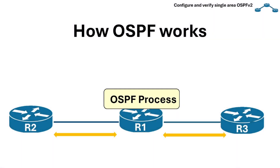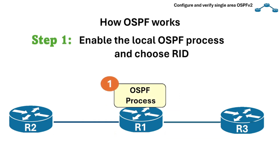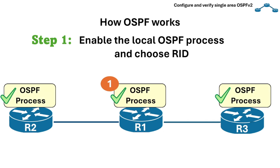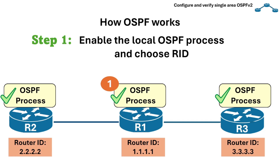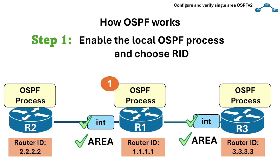To explain how OSPF works, let's break it down into different steps. Step 1 is to enable the local OSPF process and choose the router ID. The first step in the OSPF operation is to enable the local process on each router. When the process initializes, it must allocate a unique router ID to be able to send OSPF messages. Before the router can send messages and form adjacencies with other routers, we also have to specify which interfaces will participate in the OSPF process and which area they will belong to.